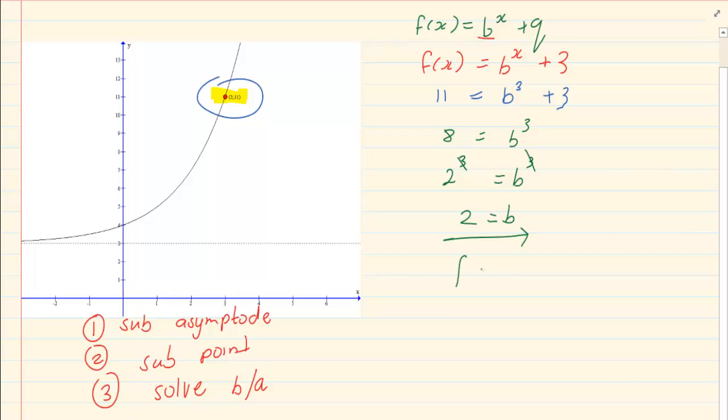So what is the equation? f of x is equal to 2 to the power of x plus 3.